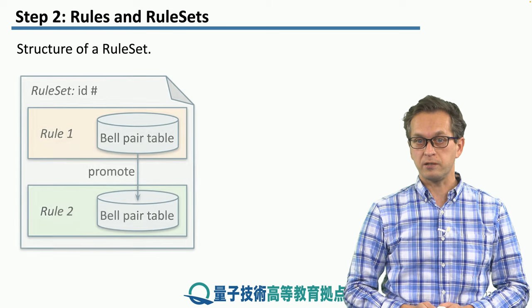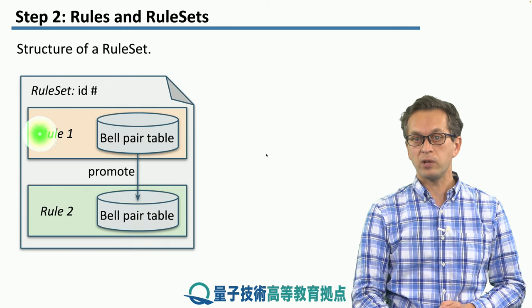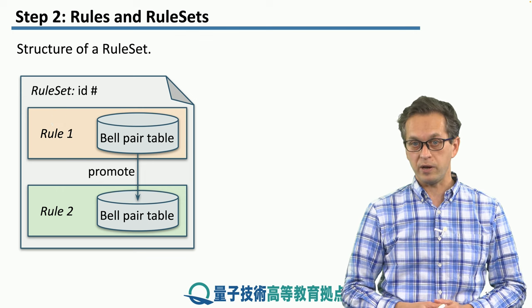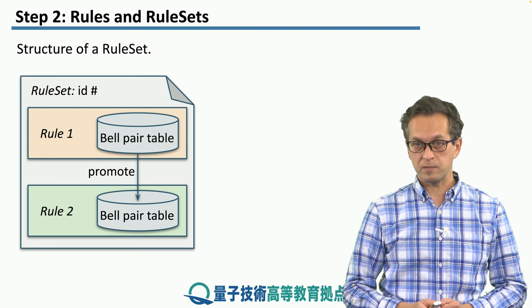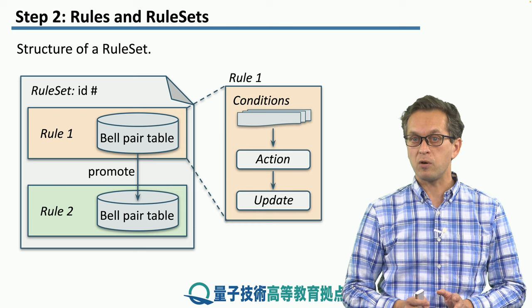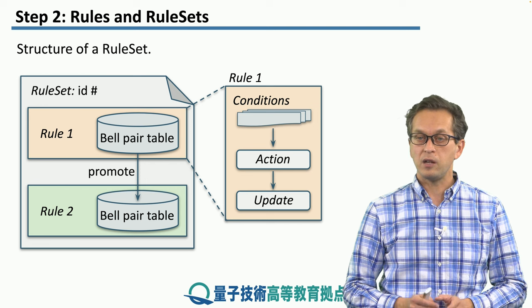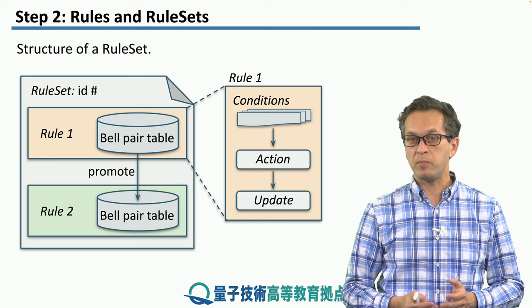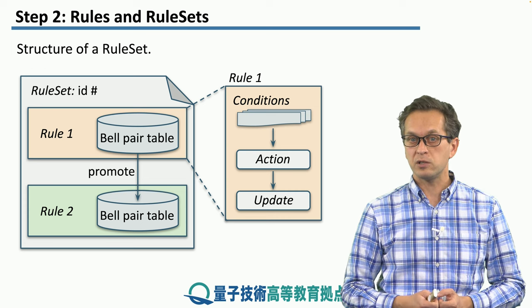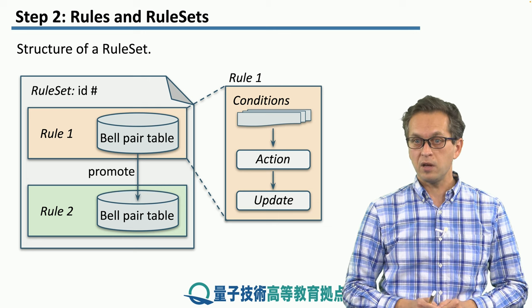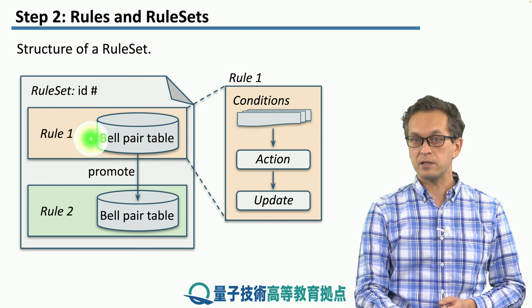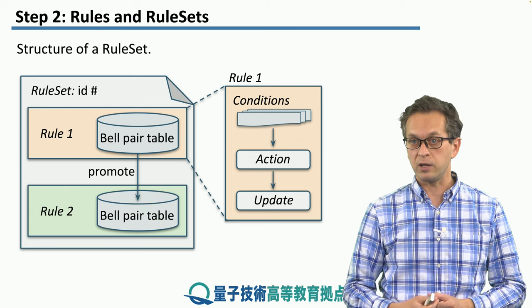Here is the structure of a rule set. We have a set of rules — in this case, rule 1 and rule 2. We assign to rule 1 some quantum resources in the form of entangled bell pairs, and only rule 1 is allowed to manipulate these bell pairs. Each rule is composed of a set of conditions, also known as conditional clauses. Once all of these conditions are satisfied, the corresponding action is carried out — this action could be anything from applying a unitary, measuring out certain qubits, to sending a classical message to a neighboring node. After this is executed, we update the bell pair table. Once the rule is finished, we promote the bell pairs locked to this rule to the next rule, where the next set of conditional clauses and corresponding action clauses are located.